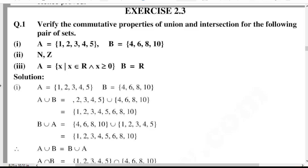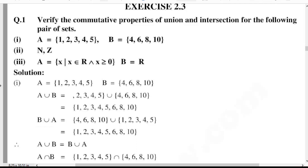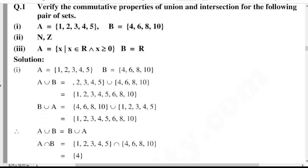Next, commutative properties of intersection. A intersection B is equal to set A {1, 2, 3, 4, 5} intersection set B {4, 6, 8, 10}. So dear students, only one element common between set A and B is 4.